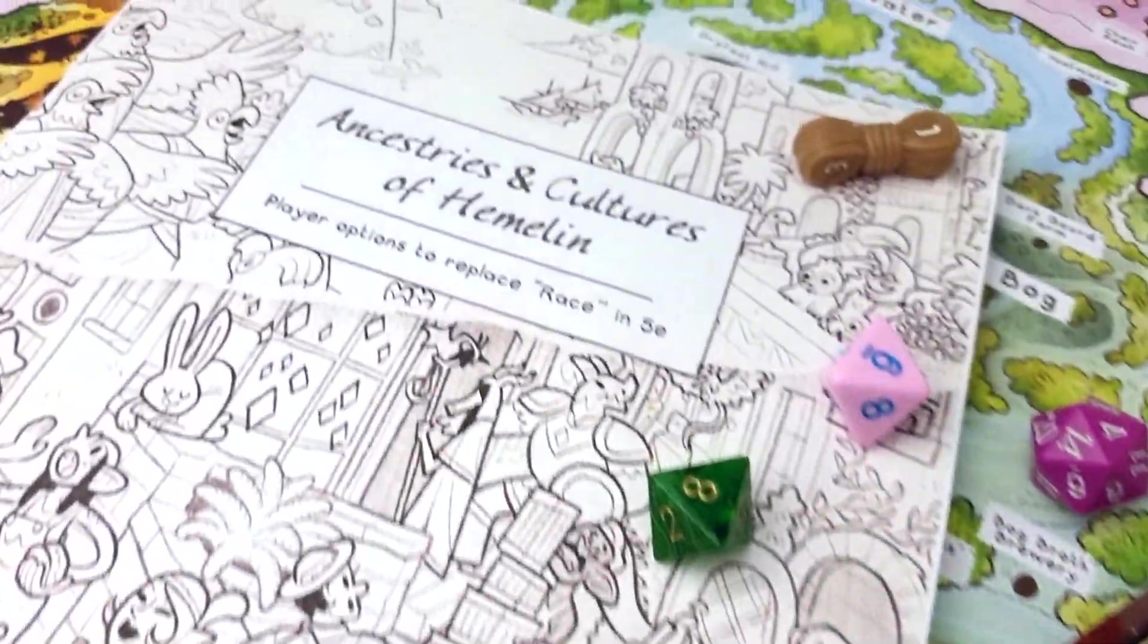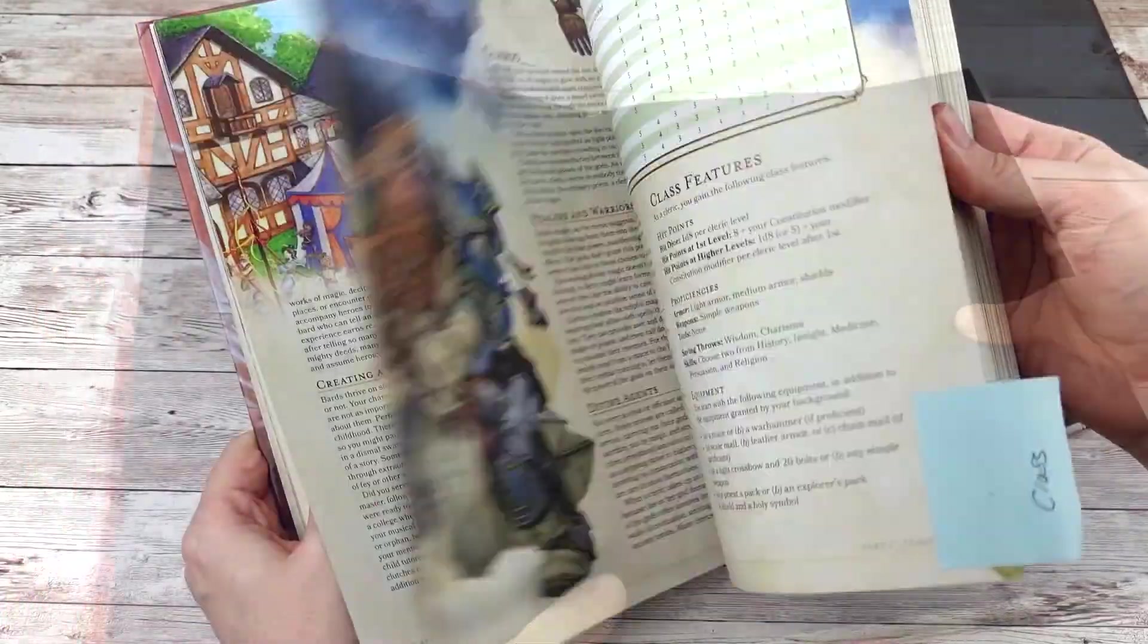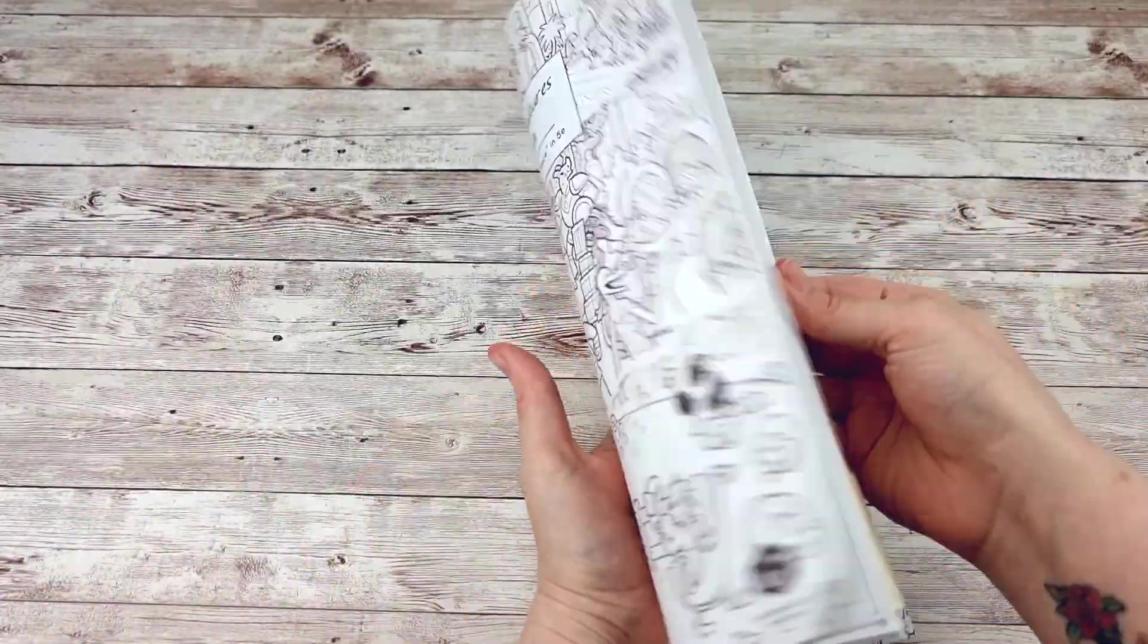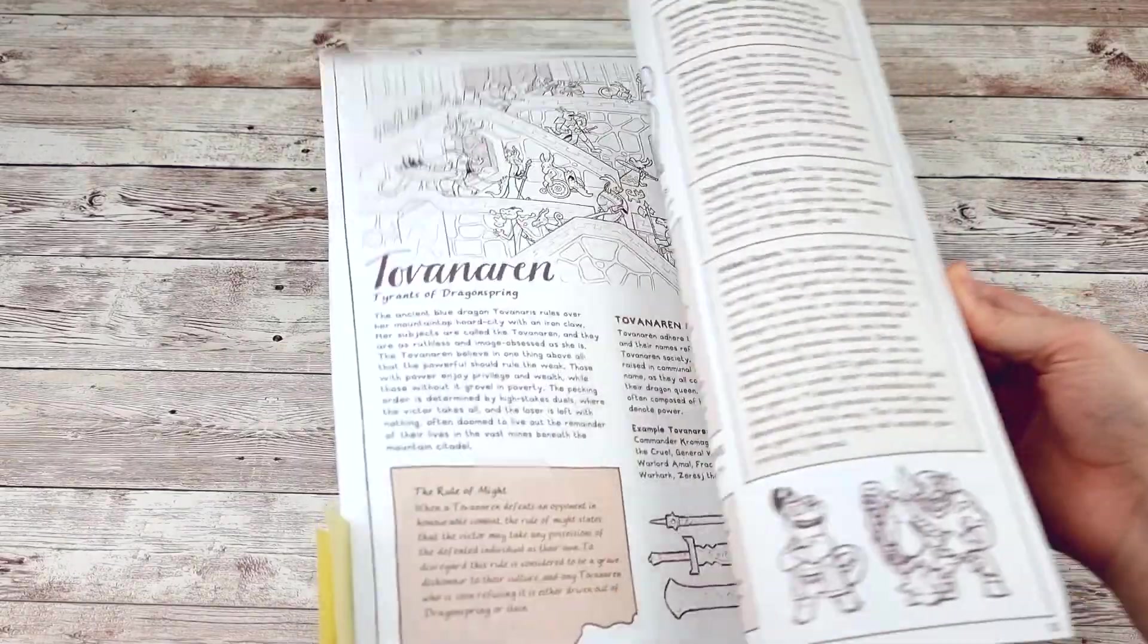To roll your character sheet you will need either a copy of the player's handbook or you can search the various options online if you don't have this. You can also use various supplementals, for example I'll be using the ancestry and culture system which is an alternative to race in 5th edition.